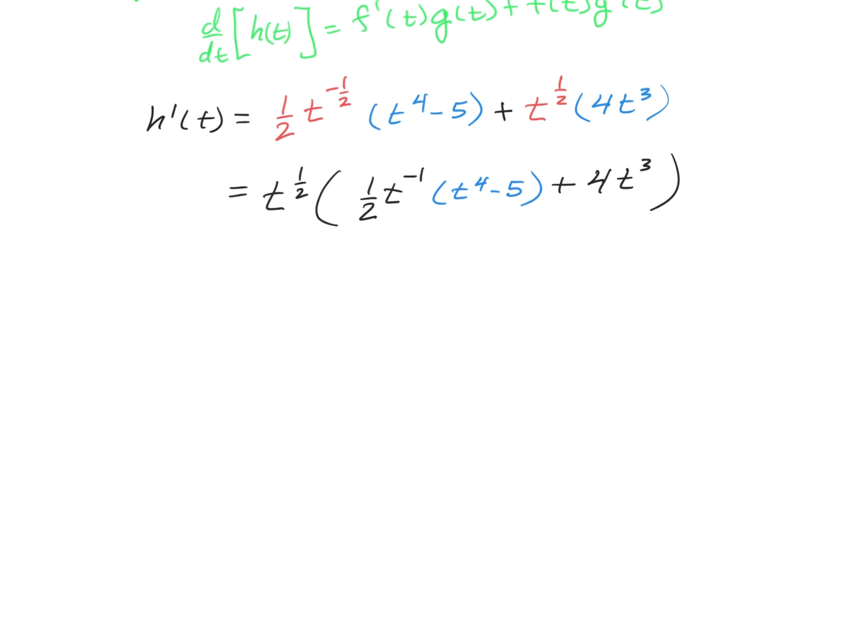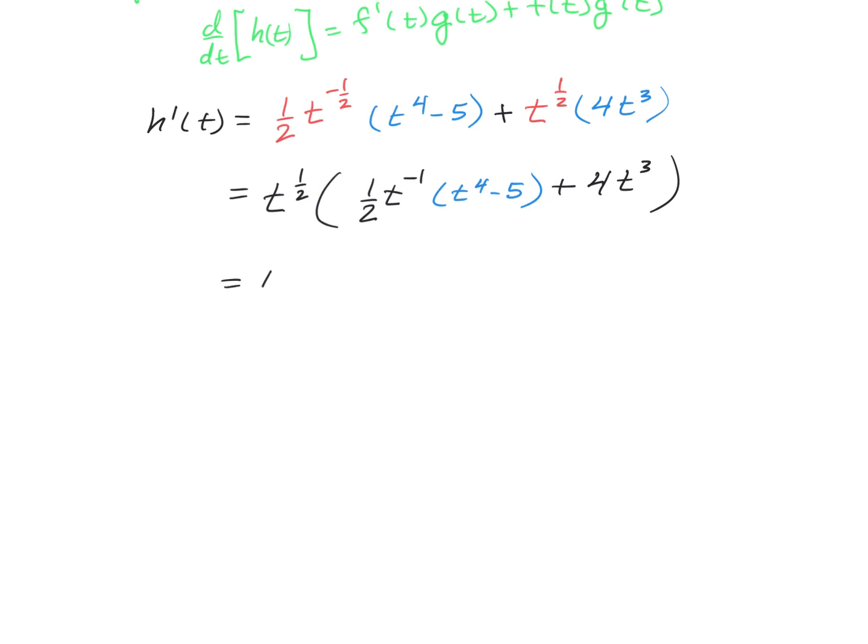We can get common denominators for this. That's going to be (t^4 - 5)/(2t) plus 4t^3. We multiply this second term by 2t/2t. We end up with t^(1/2) still in front, but now we have (t^4 - 5 + 8t^4)/(2t).